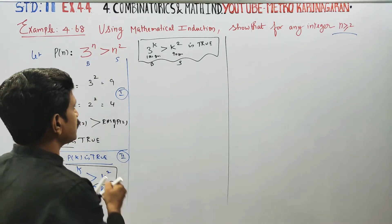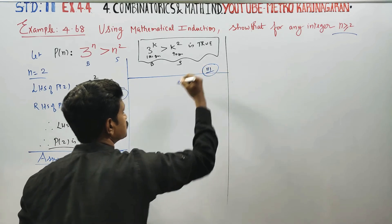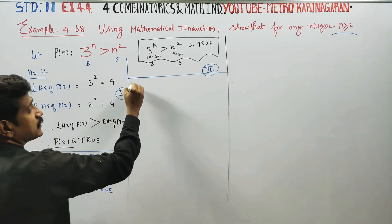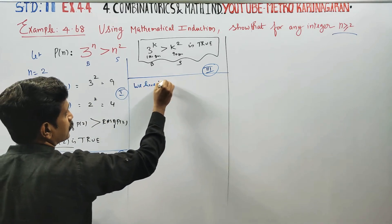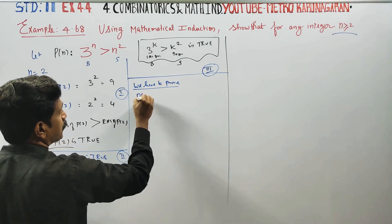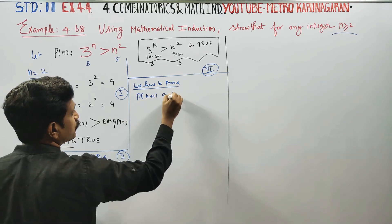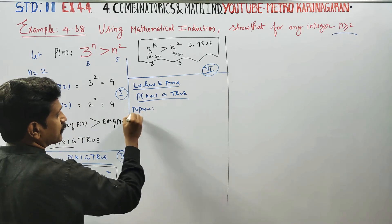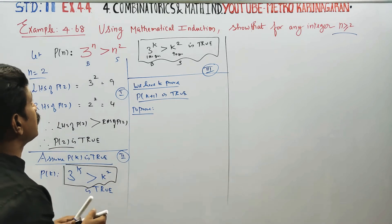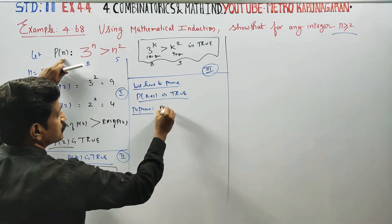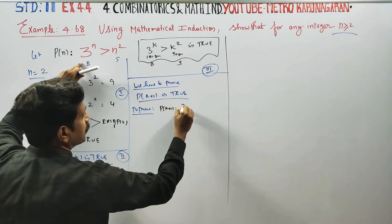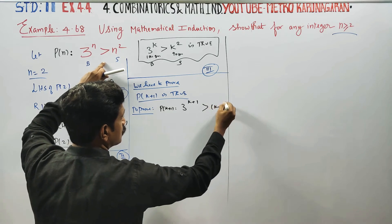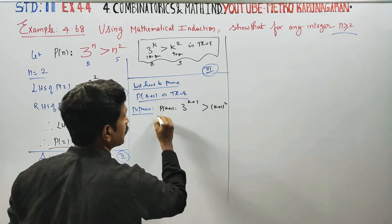Now, Stage 3 — this is the most important thing in mathematical induction. We have to prove that P of k plus 1 is true. That means we need to prove that 3 power k plus 1 is greater than k plus 1 whole square.